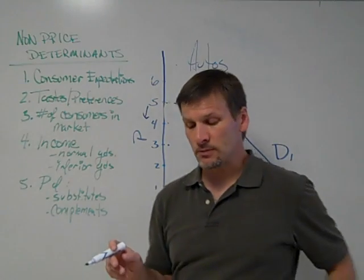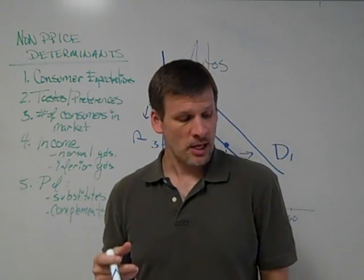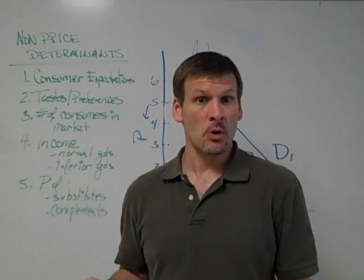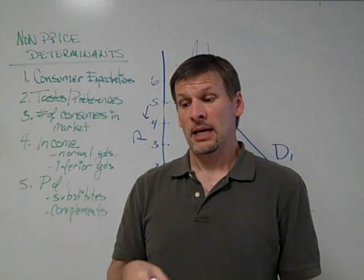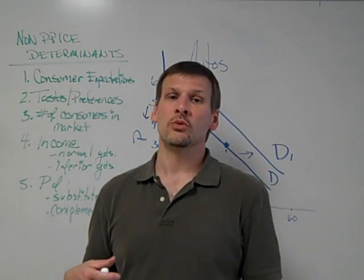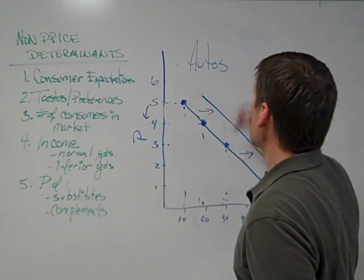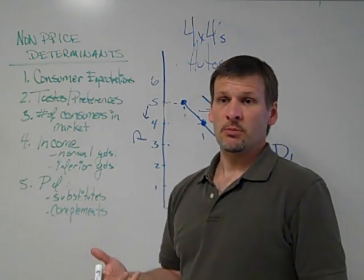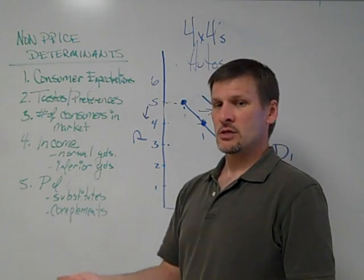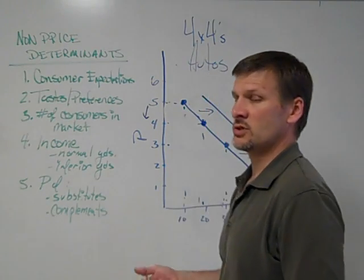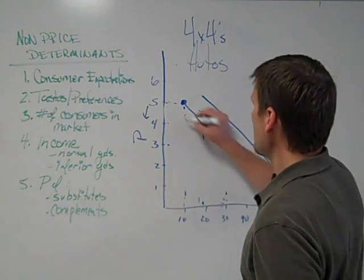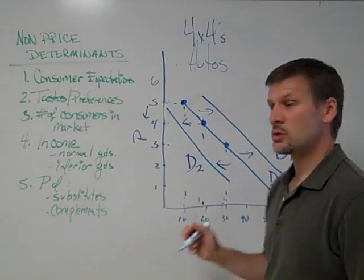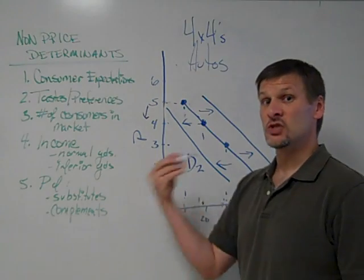Second one, changes in consumers' tastes and preferences. It could very well be, sticking with my automobile industry, that engineers or a certain car company warn that certain four-wheel drive automobiles sitting too high off the ground flip very easily. And if they warn against that, it probably means that we will be demanding less of those vehicles. So if it's these four-by-four automobiles that we've been warned might flip over easily, we will consume less of them now. It doesn't have anything to do with price. It has to do with these warnings, and that's a shift in consumers' tastes and preferences away from these kinds of four-by-fours. What does that look like? It looks like a left shift in the demand curve, denoted by D2. Again, to compare and contrast it against our original demand curve. Left shift, decrease in demand.